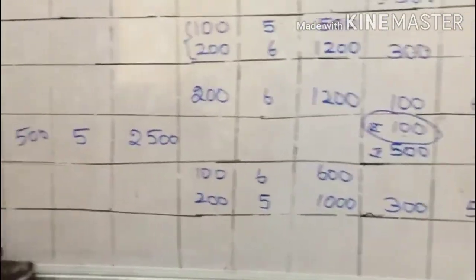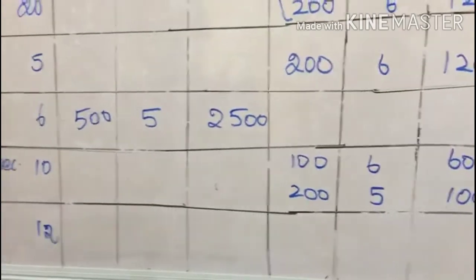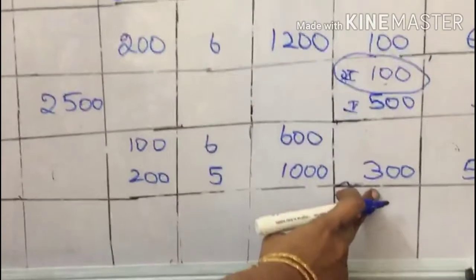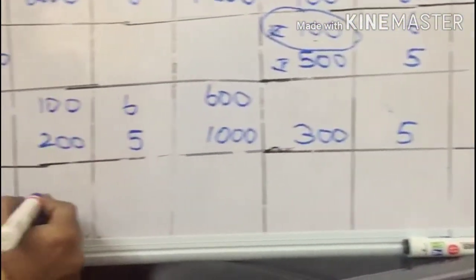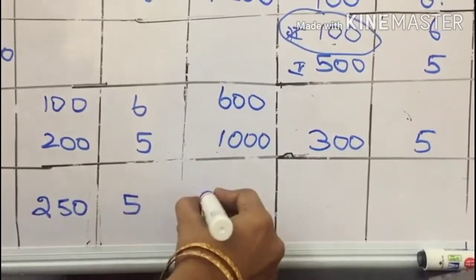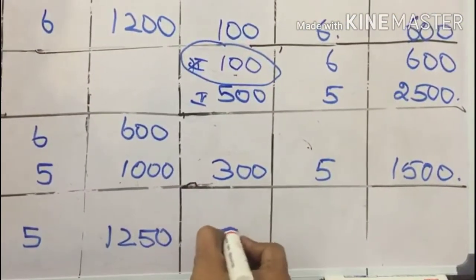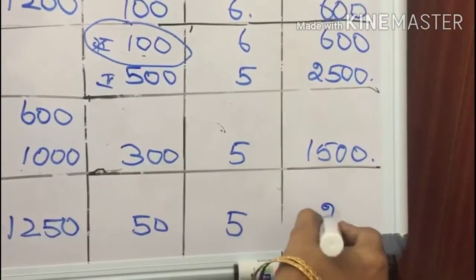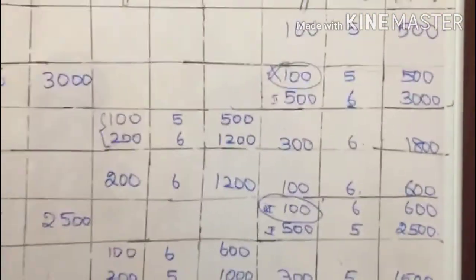On December 12, they are issuing 250 units. We have only one bag with 300 units. So 250 units at the rate of 5 gives 1250. The balance will be 50 units at the rate of 5, giving 250. That is all. If you have any doubt, you can ask in the comments column. Thank you.